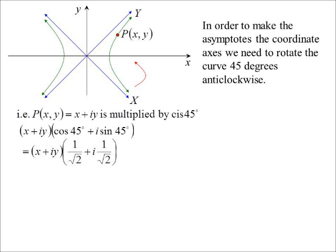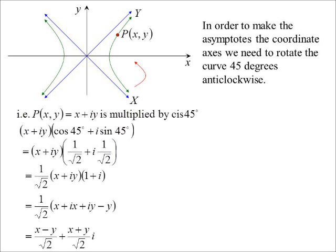And that is, of course, 1 on root 2 plus I, 1 on root 2. And if I expand it out, I get the coordinates of the new points would be, well, the X coordinate would be the real part, X minus Y over the square root of 2. And the Y coordinate would be the imaginary part, X plus Y over the square root of 2. Okay, so capital X, capital Y, so I don't confuse the two.